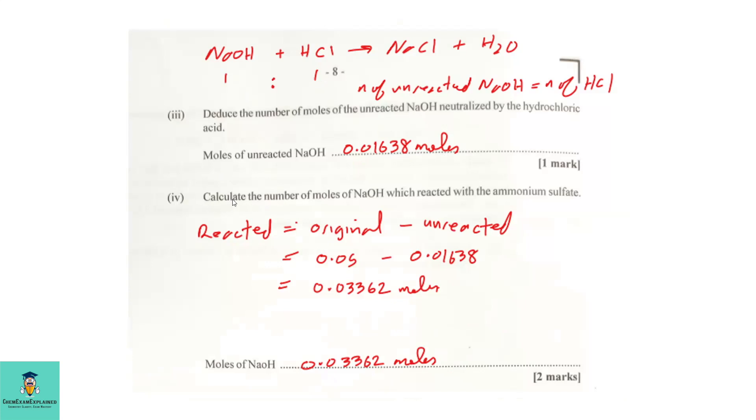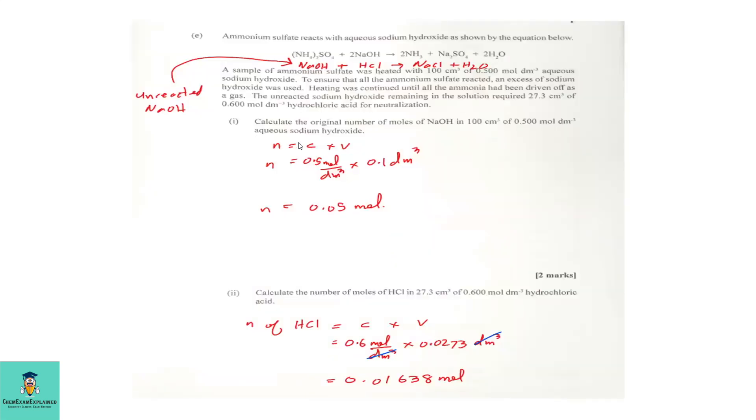Part 4. Calculate the number of moles of sodium hydroxide which reacted with the ammonium sulfate. Now, in order to find the number of moles of sodium hydroxide which reacted with ammonium sulfate, we must find the number of moles reacted. We use the formula. Reacted number of moles of sodium hydroxide equal original number of moles minus unreacted moles. The original number of moles that we calculated was 0.05 moles of sodium hydroxide.